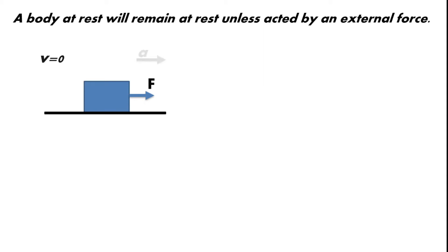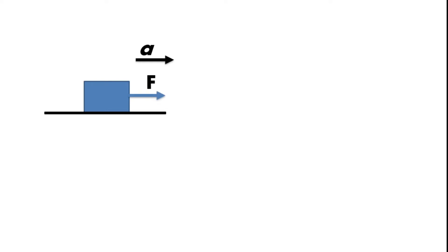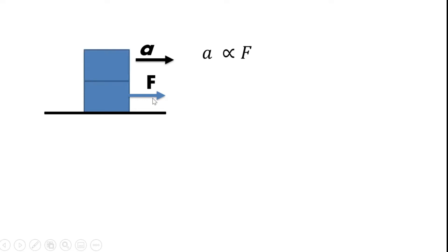Since there is a force acting on the body, there is a tendency for the box to accelerate in the direction of that force. The direction of the net force is also the direction of the acceleration. If we increase the force exerted on the body, the acceleration is bigger compared to before, so acceleration is directly proportional to force. Assuming the force is constant, this is the force exerted on the body and this is the resulting acceleration.